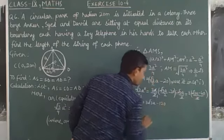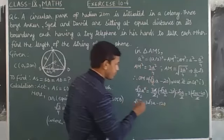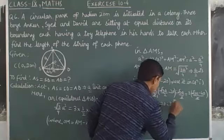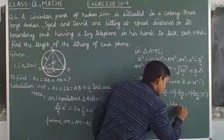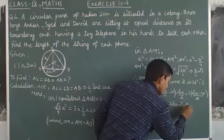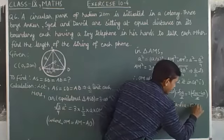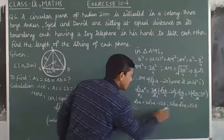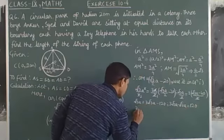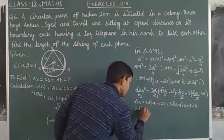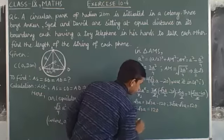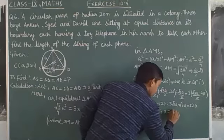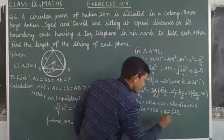So it is root 3a equals 3 root 3a minus 120. Let's separate the terms containing 'a'. It is 3 root 3a minus root 3a equals 120. Here root 3a is common, so 2 root 3a equals 120. Therefore, a equals 120 upon 2 root 3.